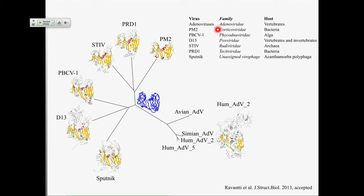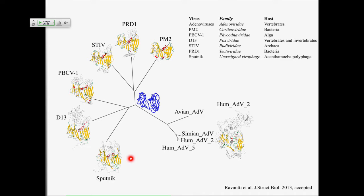Then we've got a couple of viruses that infect bacteria — PM2 and PRD1. STIV — this is the one that I discovered — all have very similar double beta-barrel structures, very similar to the structure of the major capsid protein of a virus that infects algae, and adenoviruses that infect humans. Even some of the viruses that infect other viruses — the virophage or the Sputnik — also have these structures. So the most parsimonious explanation is that some ancestral virus had this kind of fold.